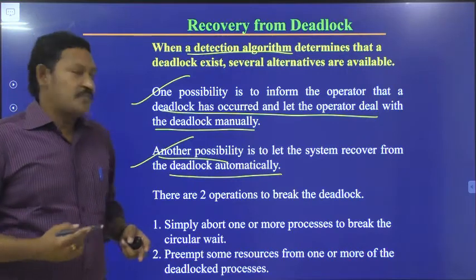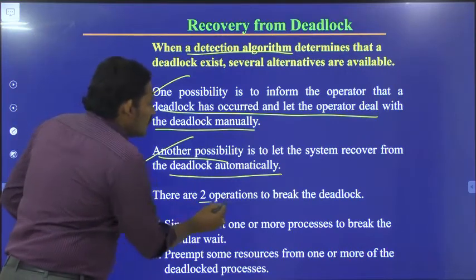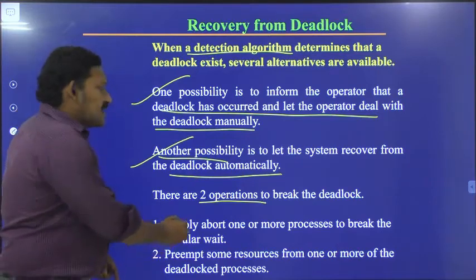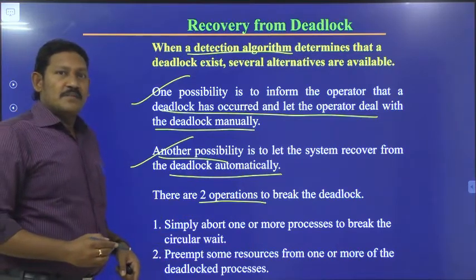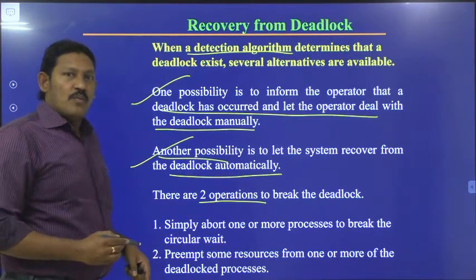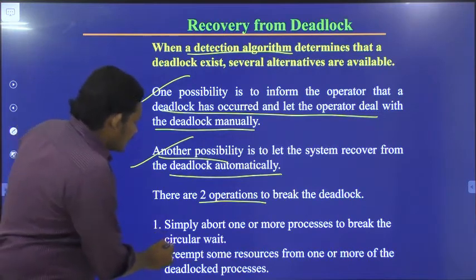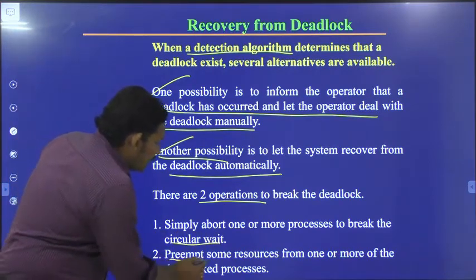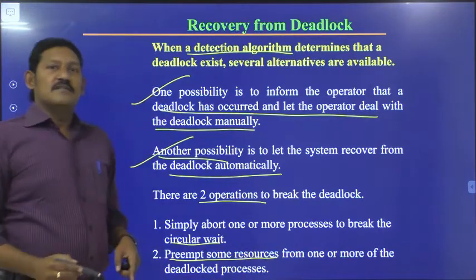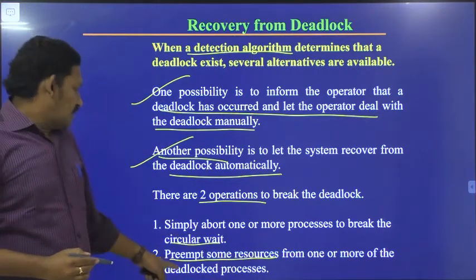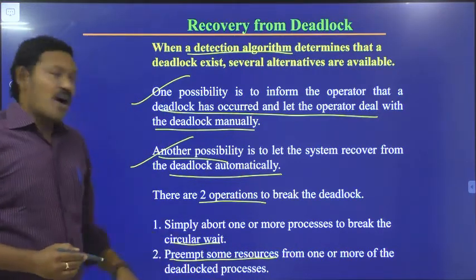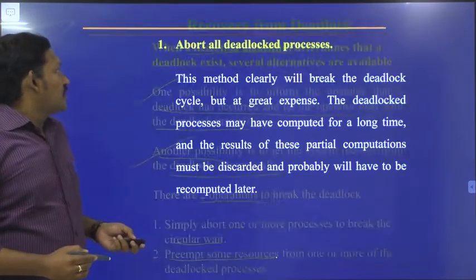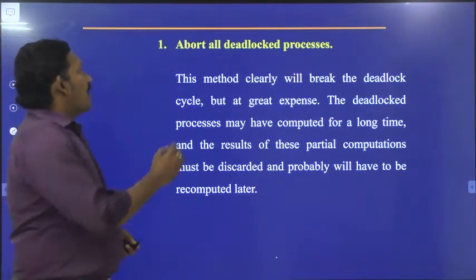There are two other operations to break the deadlock. The first is to simply abort one or more processes to break the circular wait. The second is to preempt some resources from one or more deadlocked processes. We will see these two in detail.